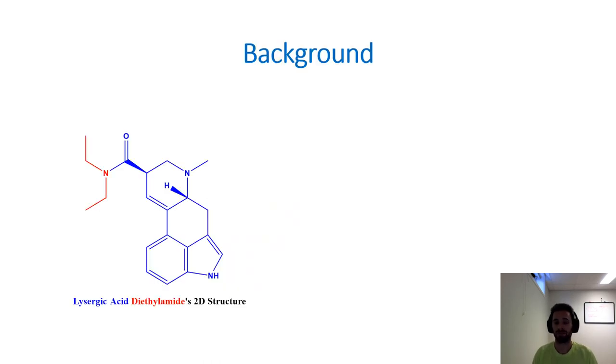Here's a little bit of background information about LSD. LSD has this following structure. Outlined in blue is the lysergic acid part of the molecule and outlined in red is the diethylamide part of the molecule. This of course is the two-dimensional structure of the drug.